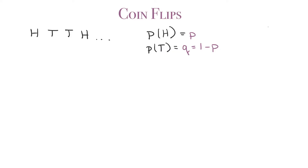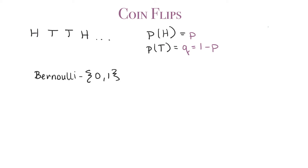We can look at this more formally as a Bernoulli random variable — a random variable whose sample space consists of 0 and 1: failure and success. In our case, people typically take heads to be the success (1) and tails to be the failure (0). So instead of heads, tail, tail, head, we can say we had a sequence of 1, 0, 0, 1, etc.